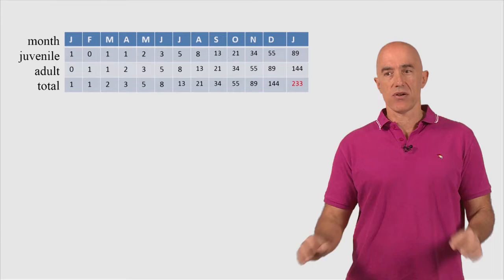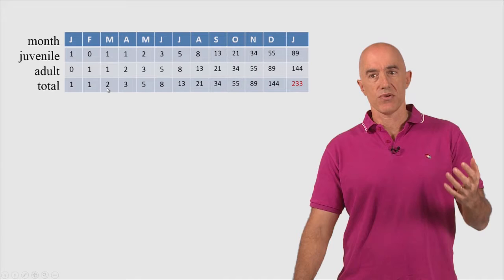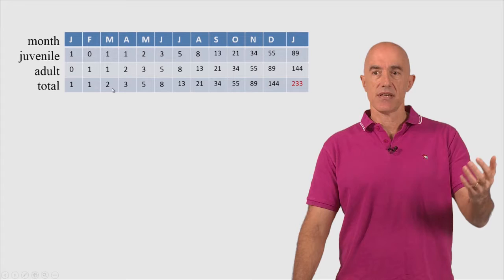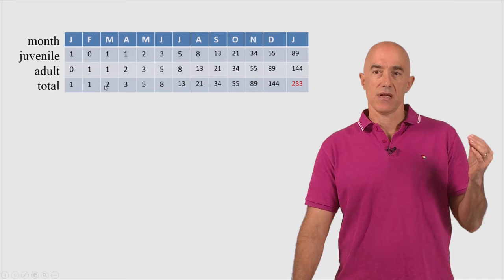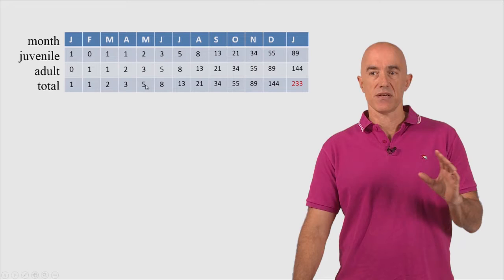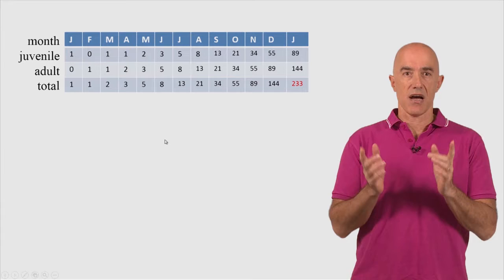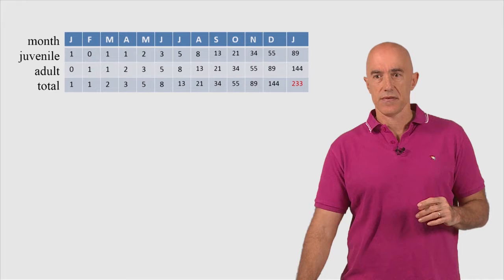The Fibonacci sequence has a very characteristic pattern. If we look at starting with this number 2, we see that this number 2 is 1 plus 1. It's the sum of the preceding two numbers. And if we continue, the number 3 is 1 plus 2. The number 5 is 2 plus 3. The number 8 is 3 plus 5. 13 is 5 plus 8. So every number then is the sum of the preceding two numbers.